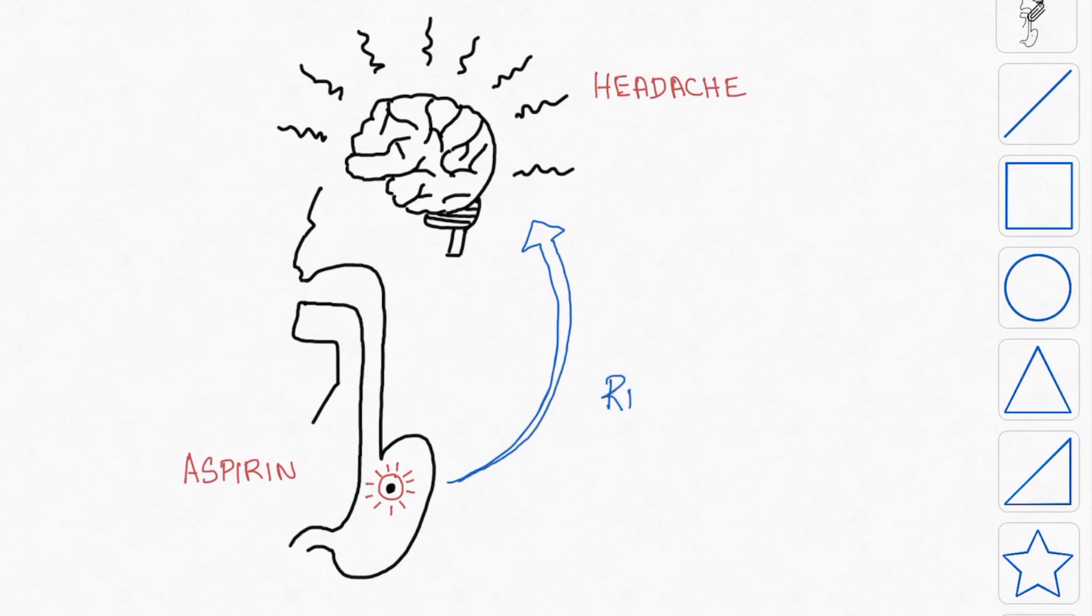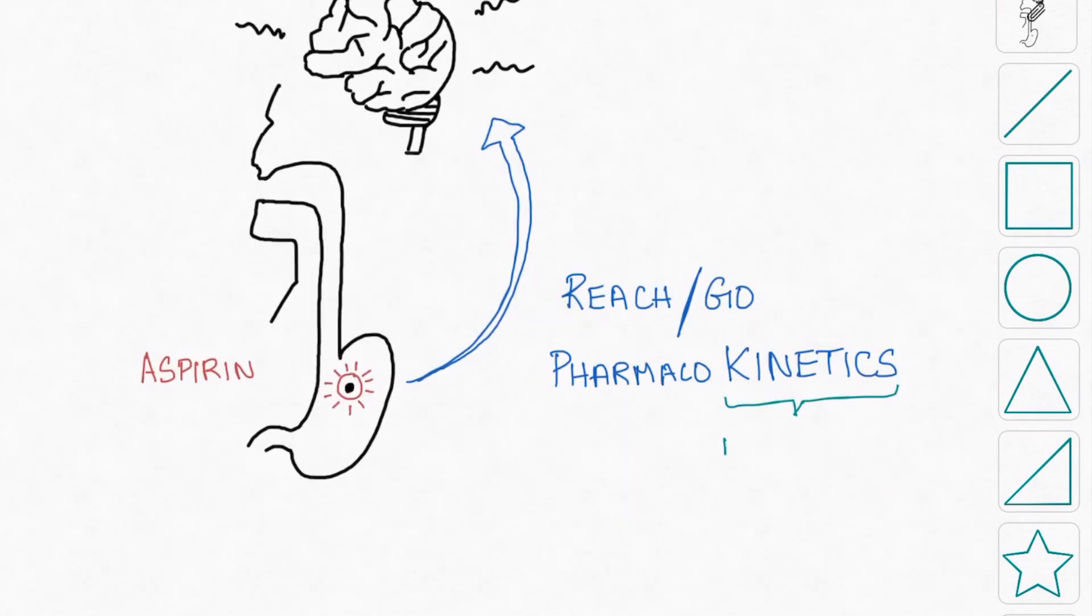This aspect of aspirin reaching or going to the target organ is studied under pharmacokinetics. Kinetics refer to movement, and hence pharmacokinetics refer to the movement of medicine within the body.